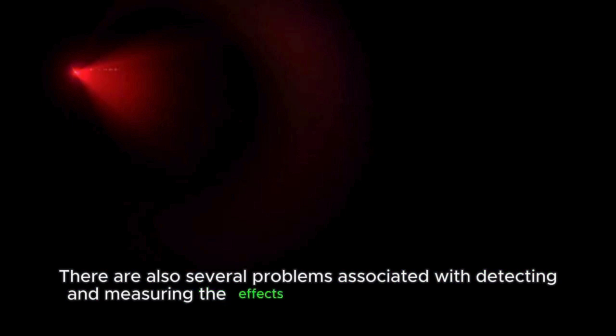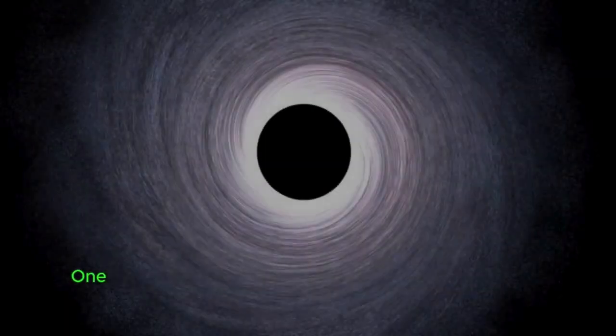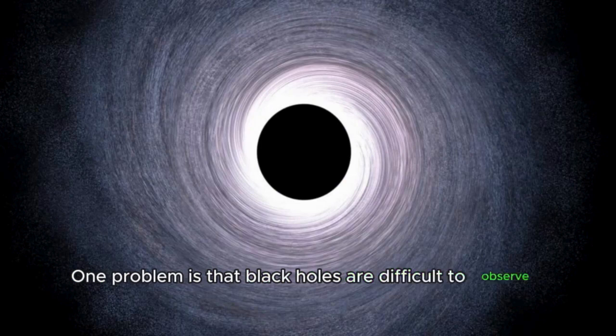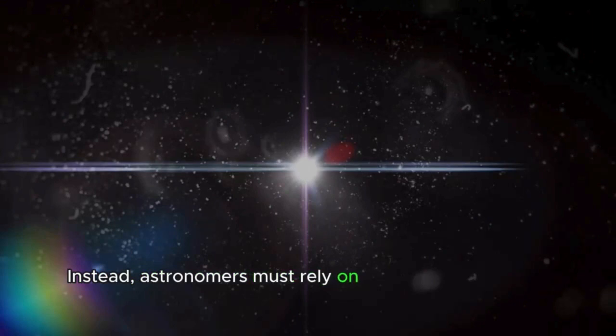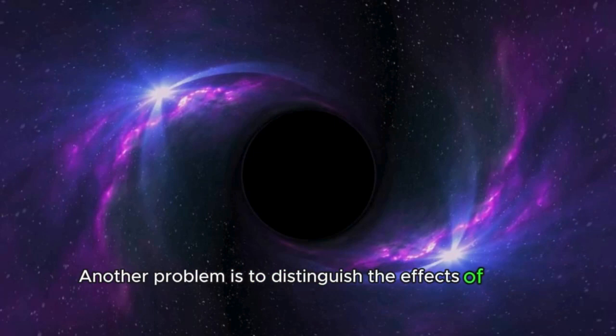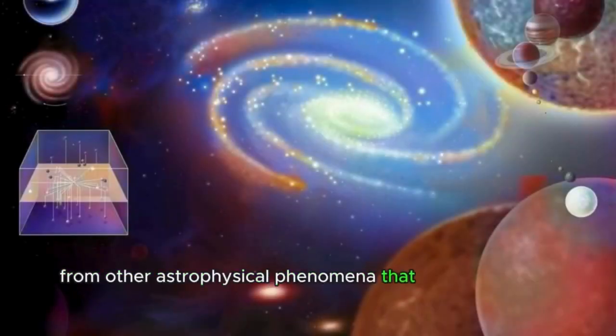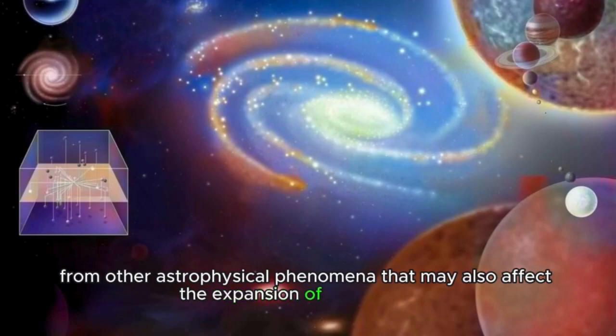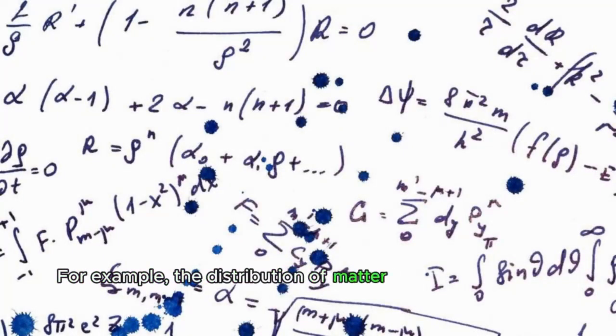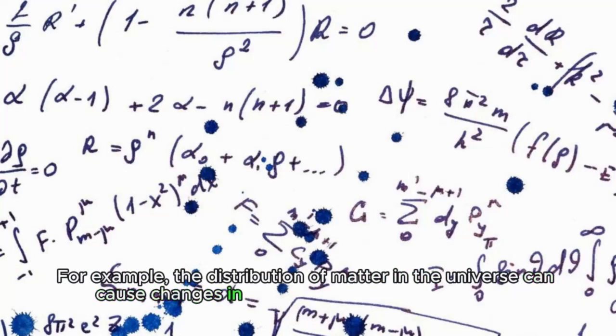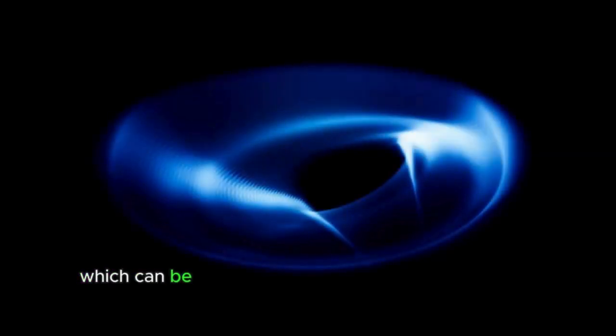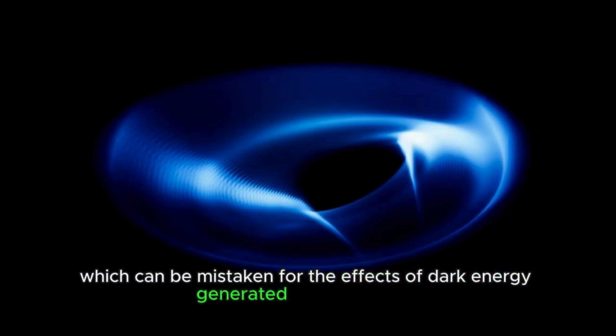There are also several problems associated with detecting and measuring the effects of black holes on dark energy. One problem is that black holes are difficult to observe directly because they do not emit any light. Instead, astronomers must rely on indirect observations like gravitational lensing of background stars and galaxies. Another problem is to distinguish the effects of black holes from other astrophysical phenomena that may also affect the expansion of the universe. For example, the distribution of matter in the universe can cause changes in the observed rate of expansion, which can be mistaken for the effects of dark energy generated by black holes.